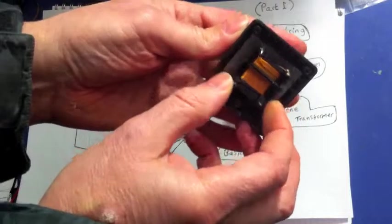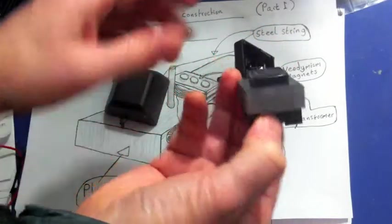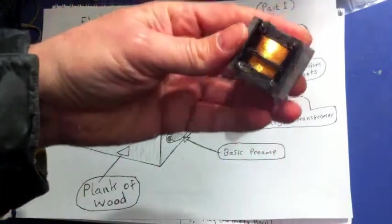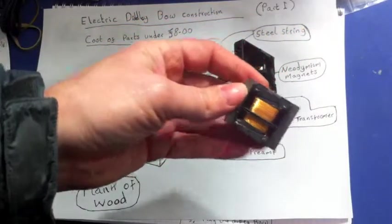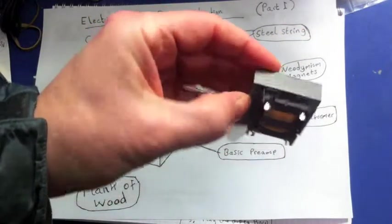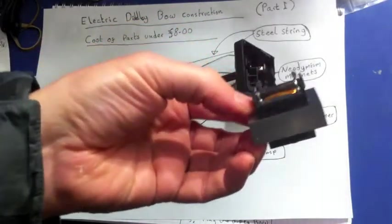So inside all of these mobile phone chargers is a transformer and they're all going to look very similar to this. In fact, they nearly all look like this. So here you've got a transformer. So we're going to be using that and that is going to be what's called our pickup for our diddly bow. Now, I'll explain how that works in a minute, but that's the piece you want.